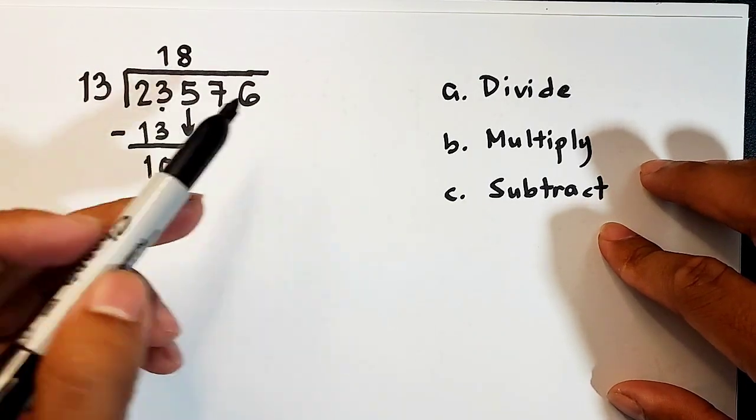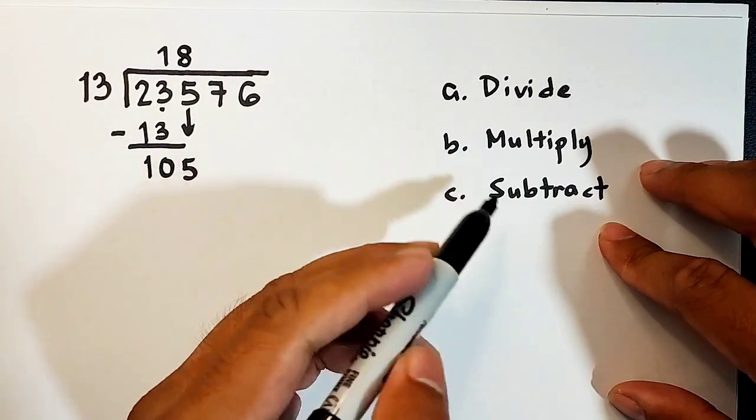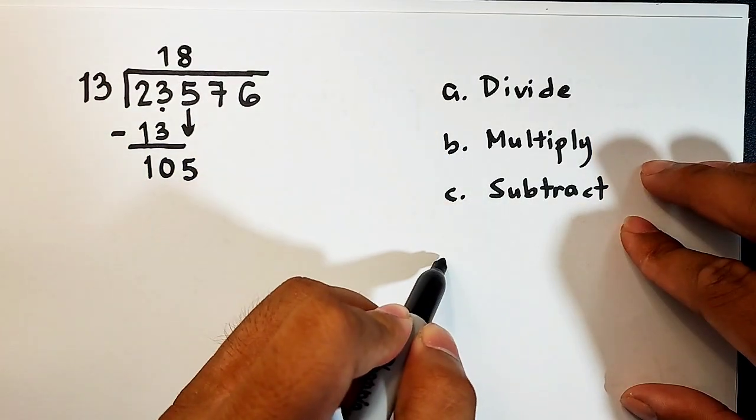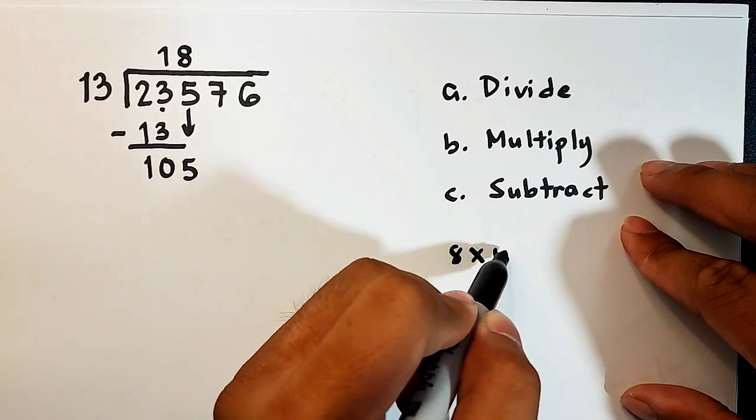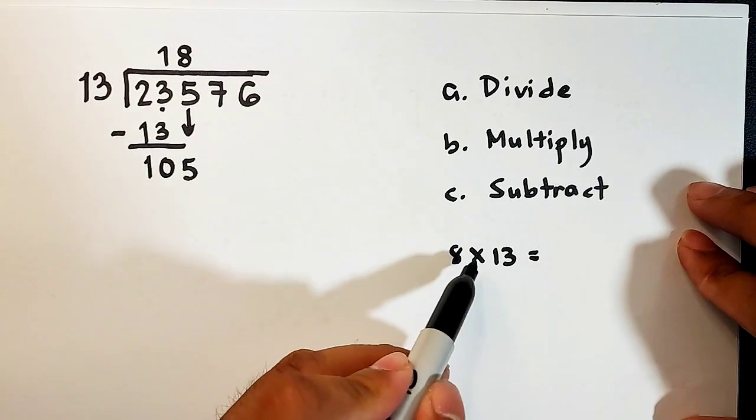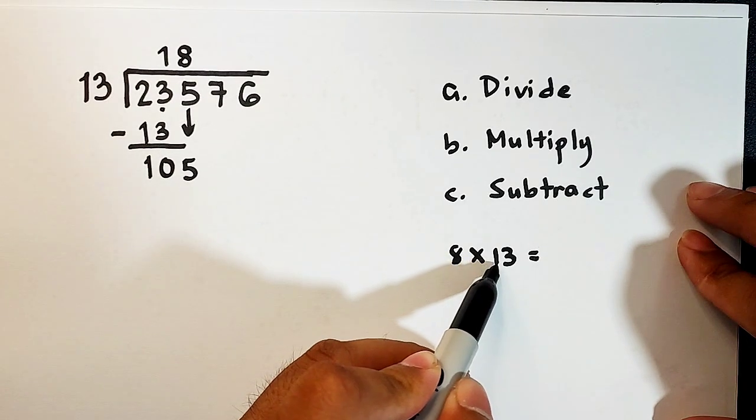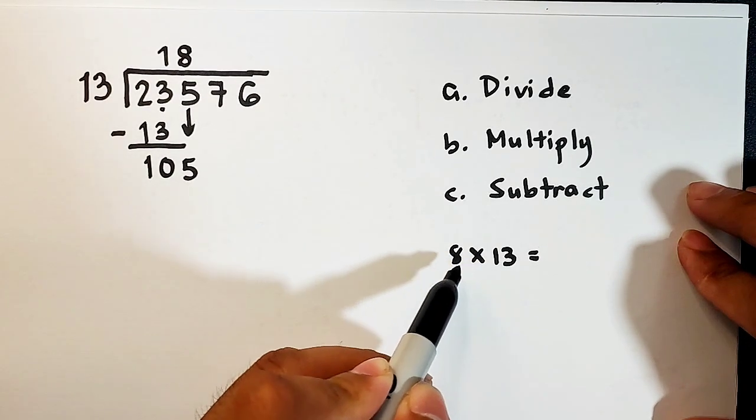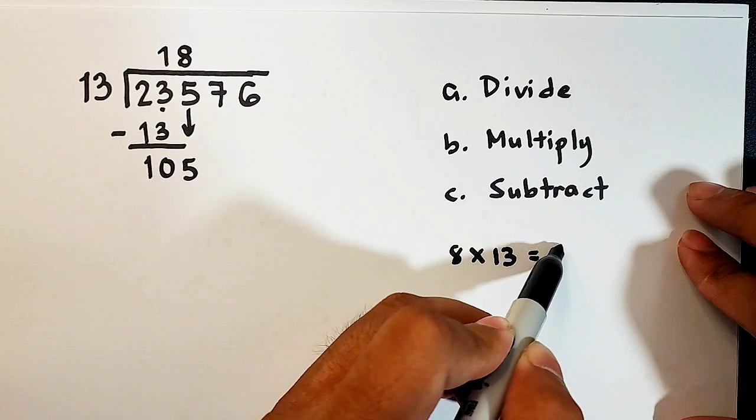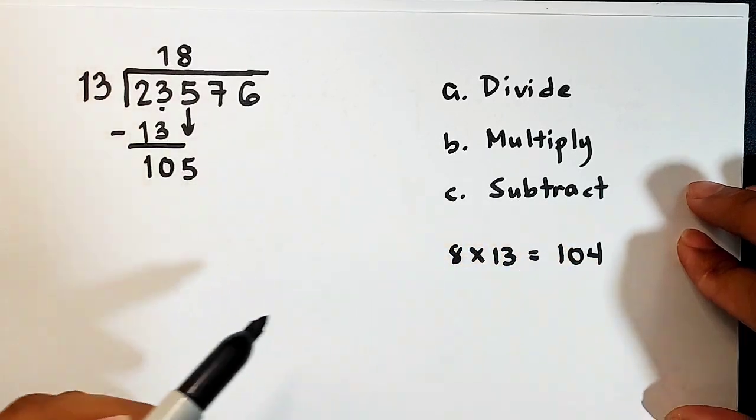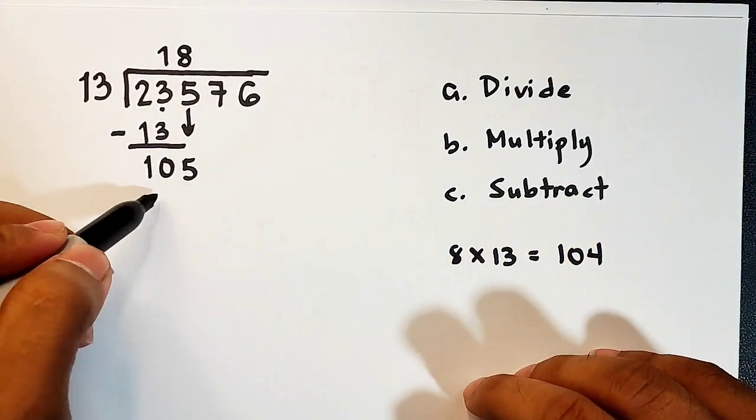We have 8 thirteens inside 105. So what we need to do, after dividing, we need to multiply. So we have 8 times 13. So what do you think is the answer? 8 times 10 is 80, and 8 times 3, that is equal to 24. So we have 104, right?